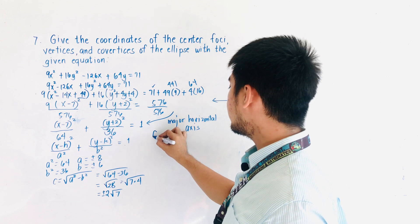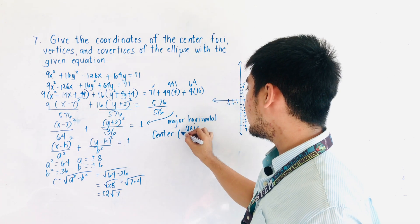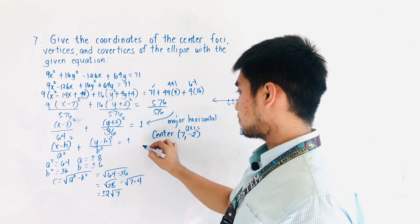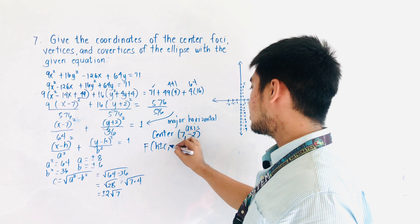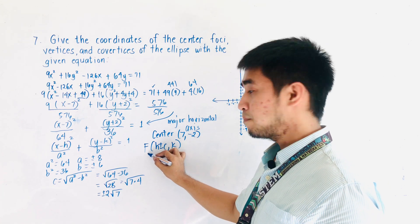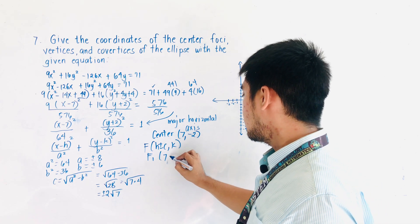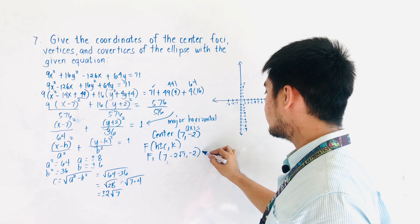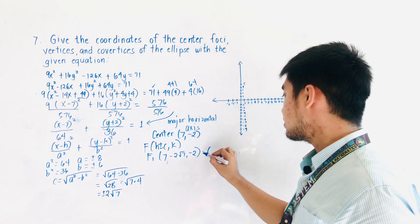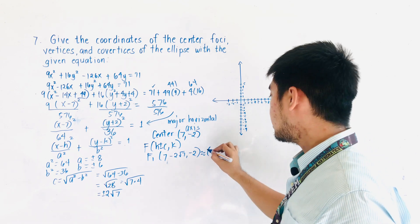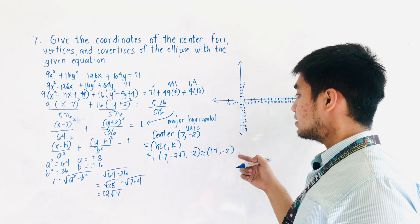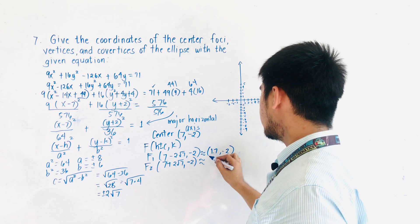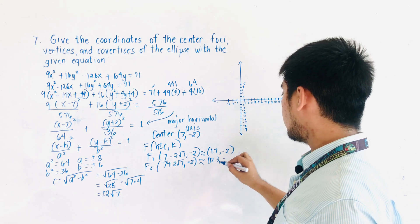We're now ready to find the center. The center is located at (7, -2). For the foci, the formula is (h ± c, k). So F1 is at (7 - 2√7, -2), which in decimal form is approximately (1.7, -2). And F2 is at (7 + 2√7, -2), which is approximately (12.3, -2).